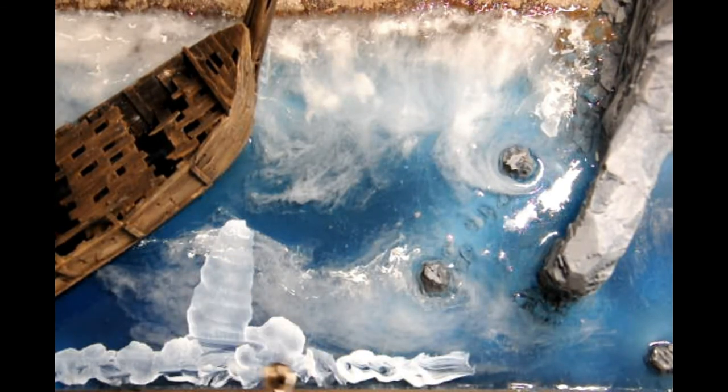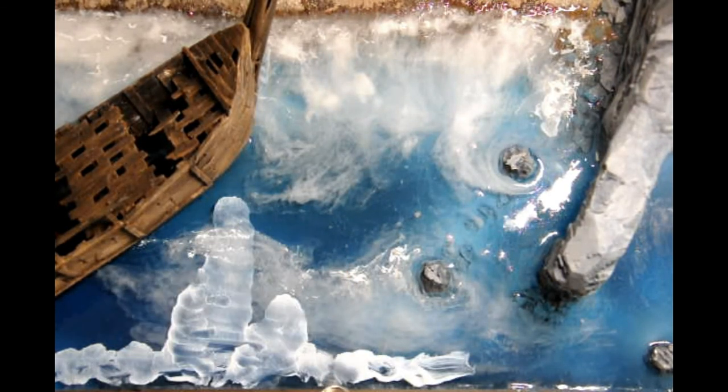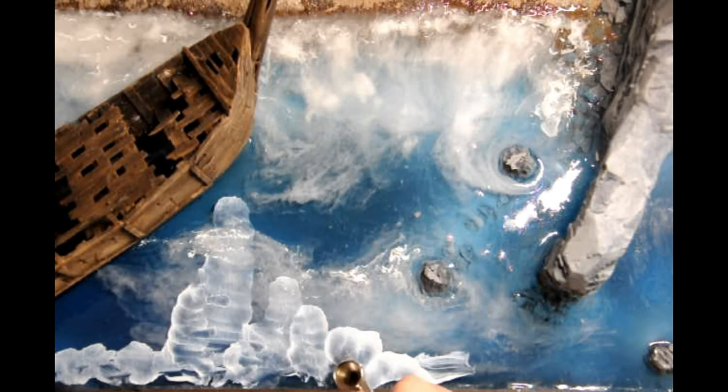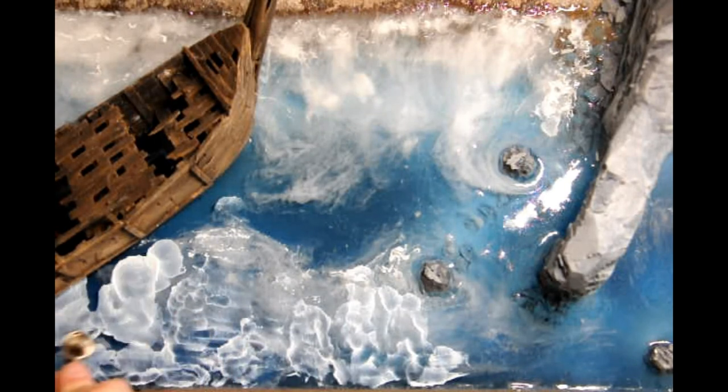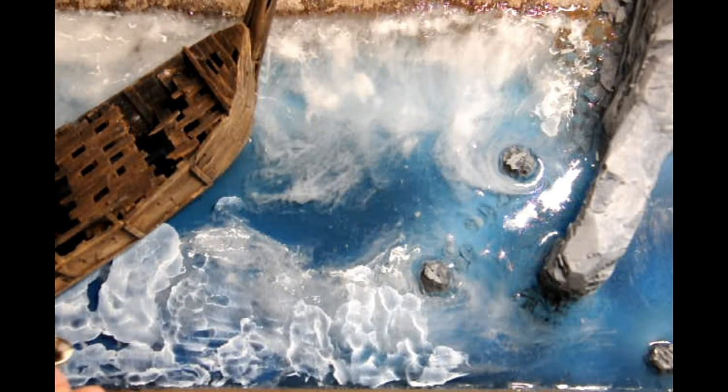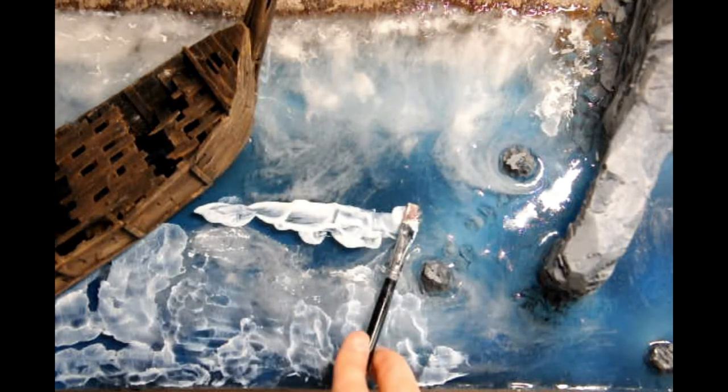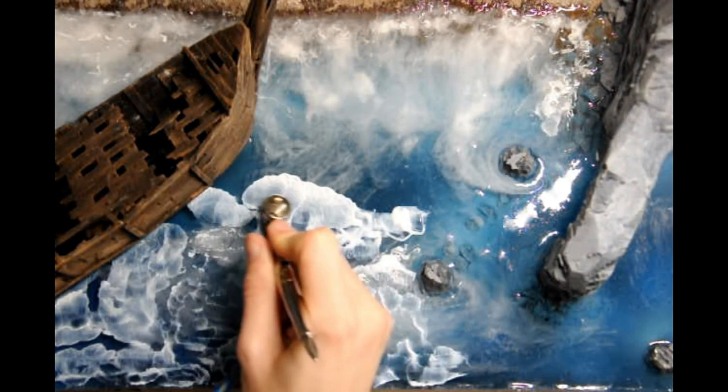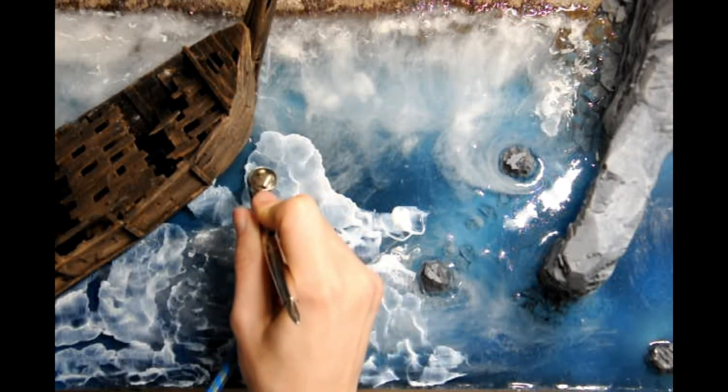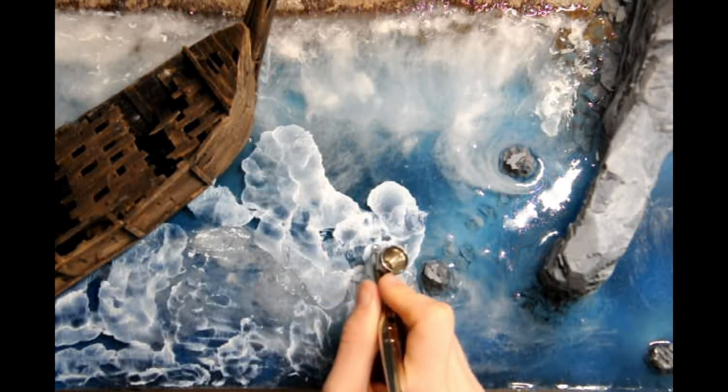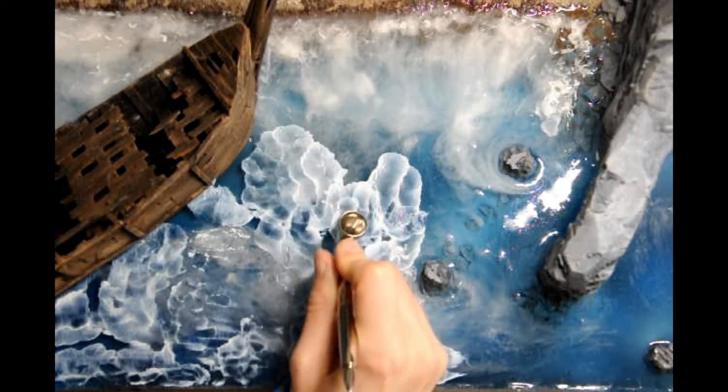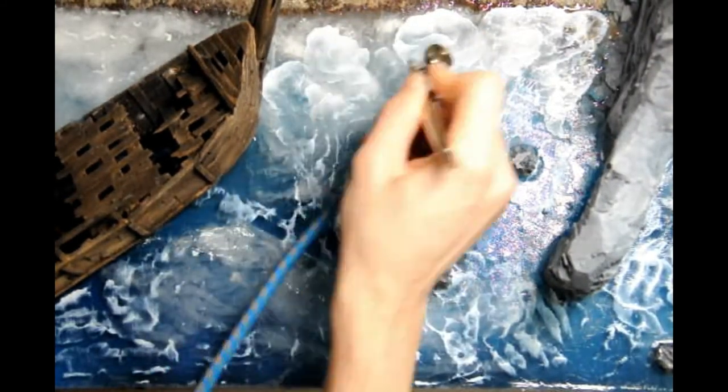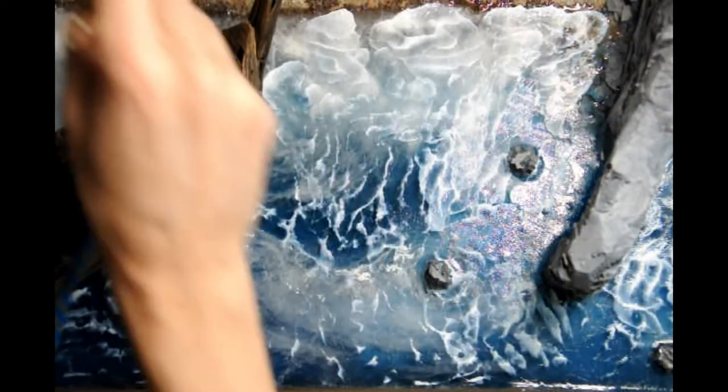Once the epoxy is dry, it's time for the final touch that will add a bit more vibrancy to the diorama. With the help of some gloss mod podge, we're gonna make the water shine. Add some mod podge to the surface and with the help of an airbrush, blow it forward. If you don't have an airbrush, don't worry, just take a brush and start adding it in small quantities. It dries fairly quickly, so I recommend you to do it in small batches.